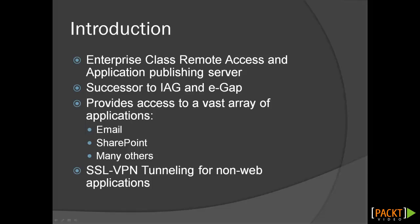UAG also provides access to other network resources using SSL VPN tunneling. Using this technology allows an organization to provide access to applications such as Citrix Zen Desktop, IBM Hosts On Demand, and many others.